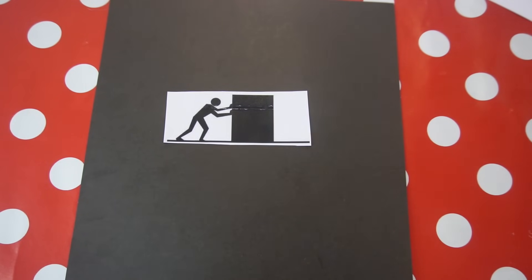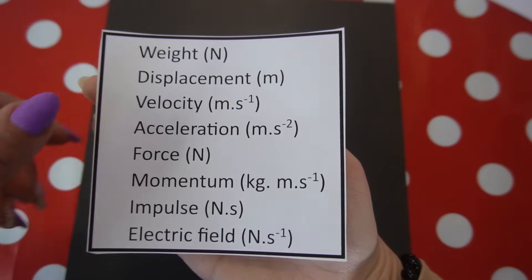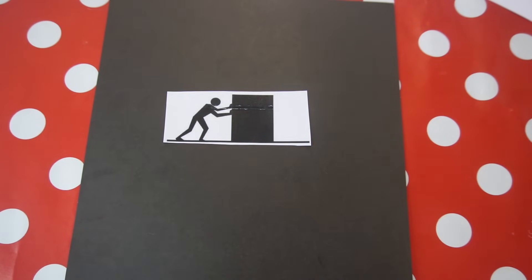We can represent vectors graphically using an arrow. The length of the arrow represents the magnitude of the vector — a short arrow represents a small magnitude, and a long arrow represents a larger magnitude. The direction of the arrow indicates the direction of the vector. For example, a person pushing a box to the right with a force of 5 newtons can be represented by an arrow pointing to the right, since force is a vector.